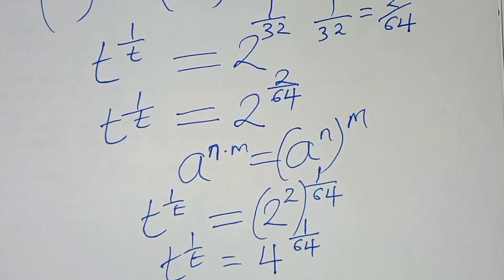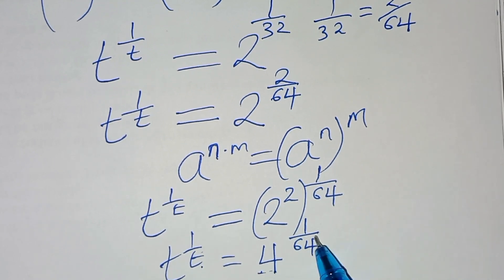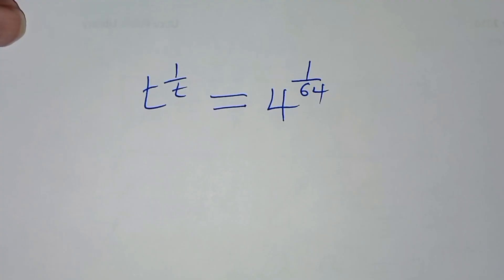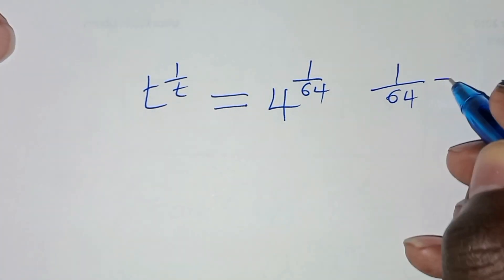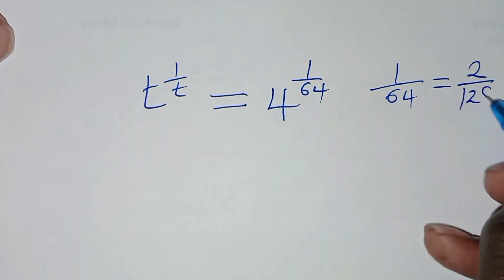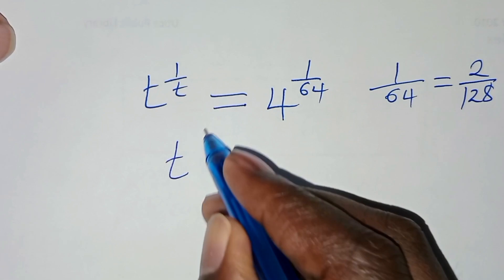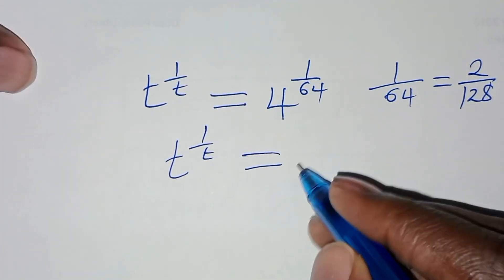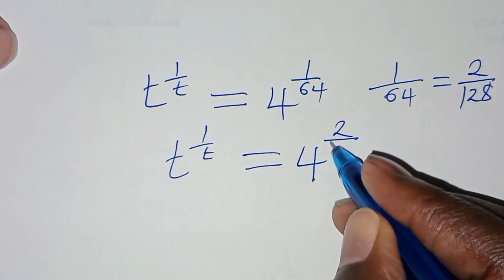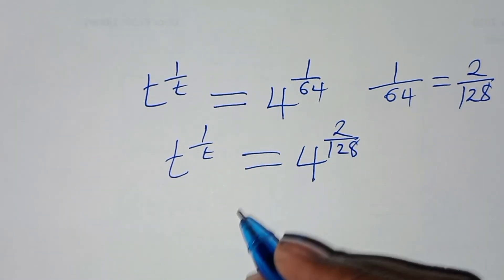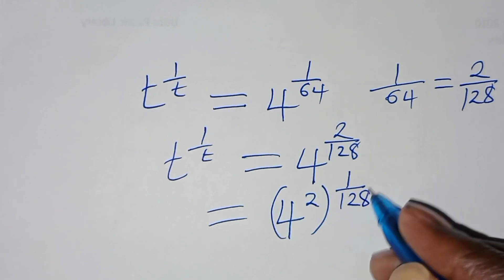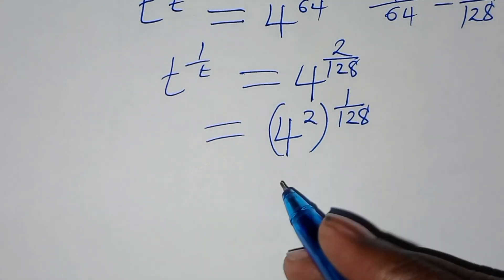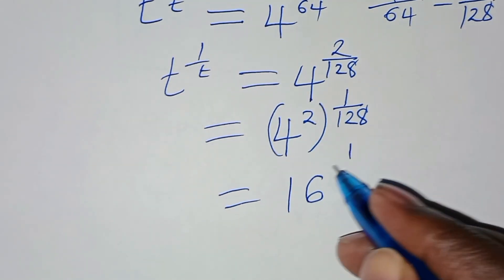You can see here the base is equal to the exponent. We have 4, which is not equal to 64, so let's proceed. We have t to the power 1 over t equal to 4 to the power 1 over 64. Now 1 over 64 can be expressed as 2 over 128. Substituting this, we'll have t to the power 1 over t equal to 4 to the power 2 over 128. This can be expressed as 4 to the power 2, raised to the power 1 over 128. So 4 squared is 16, raised to the power 1 over 128.